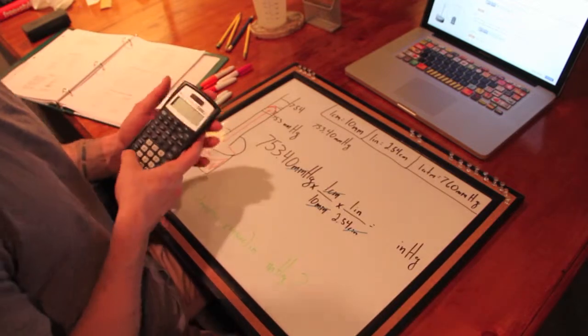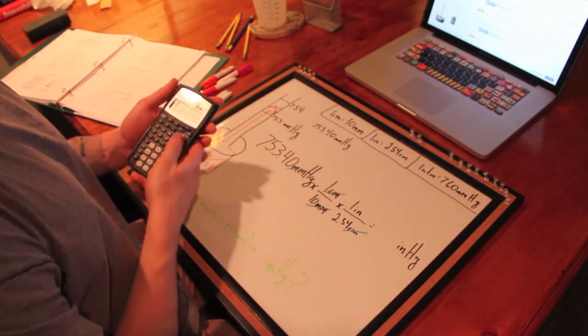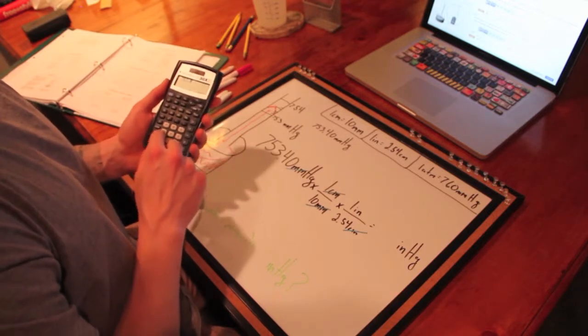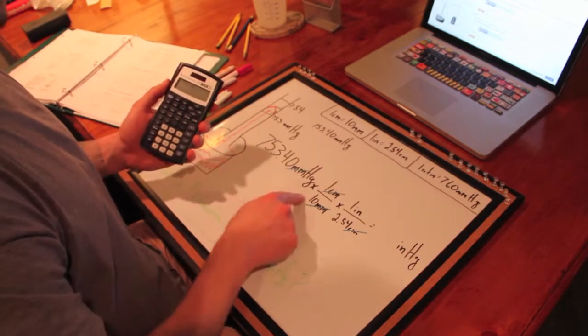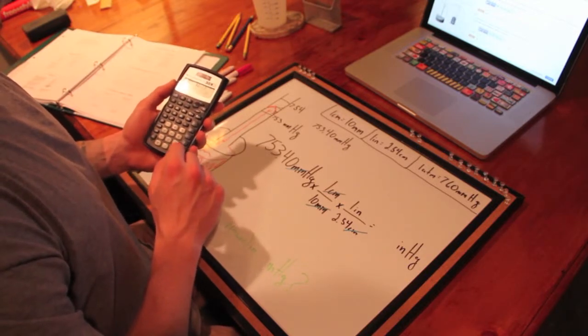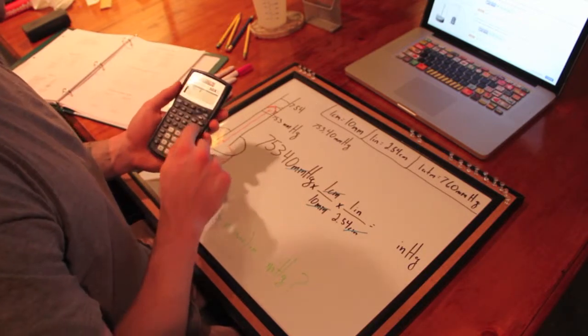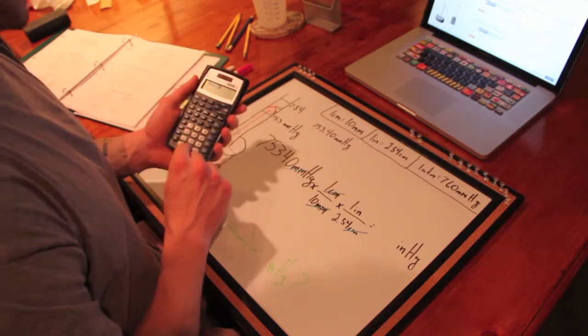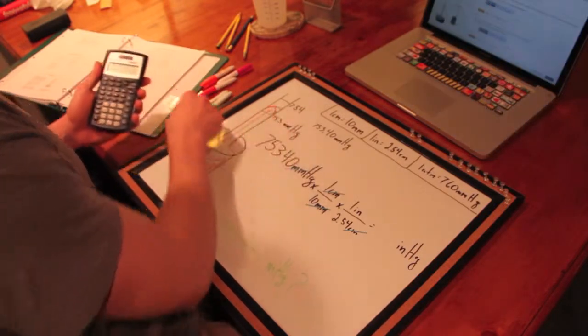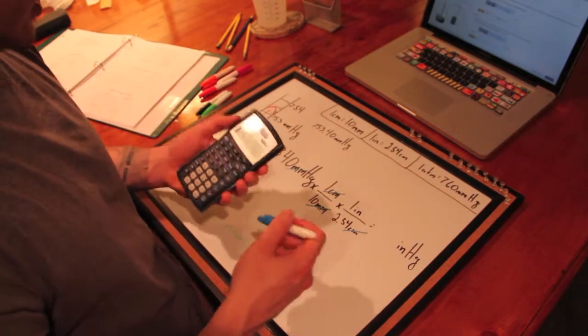And then we can use our calculator now. There's nothing wrong with using a calculator. 753.40 divided by 10, and then that answer divided by 2.54 equals 29.66.